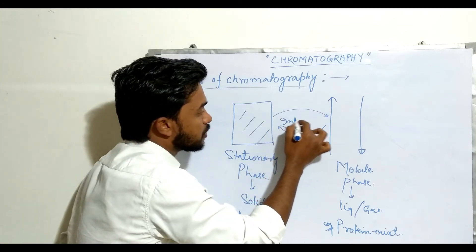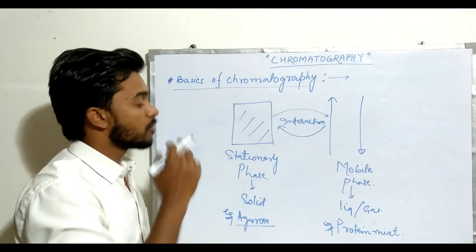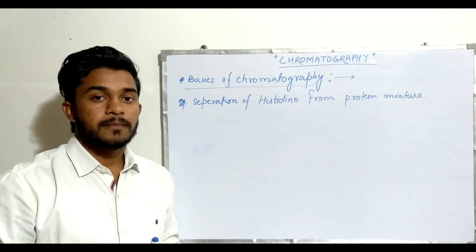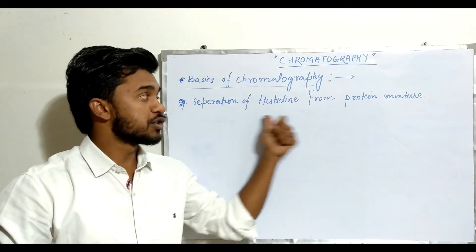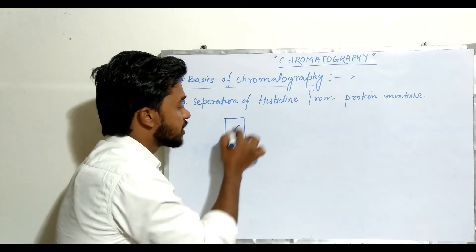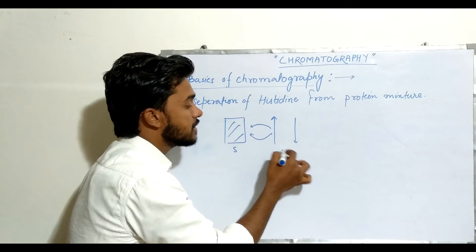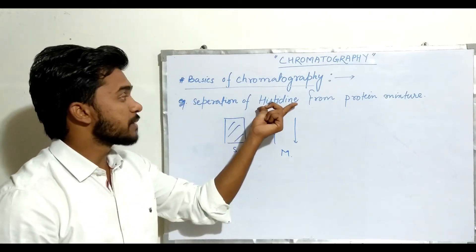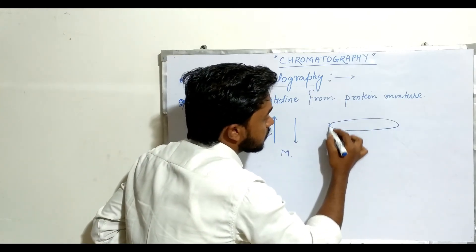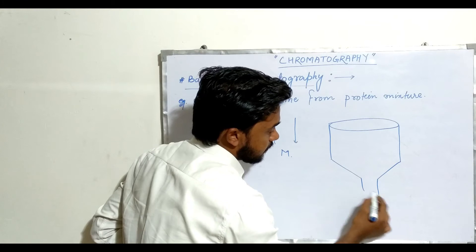This interaction between the stationary phase and mobile phase results in the separation of chemicals by chromatography. Let us take an example of separation of histidine from a protein mixture. As we know, we have two phases: the stationary phase and the mobile phase, and there is an interaction between them. We have to separate histidine from a protein mixture, so consider we have a column or setup through which we perform this separation.